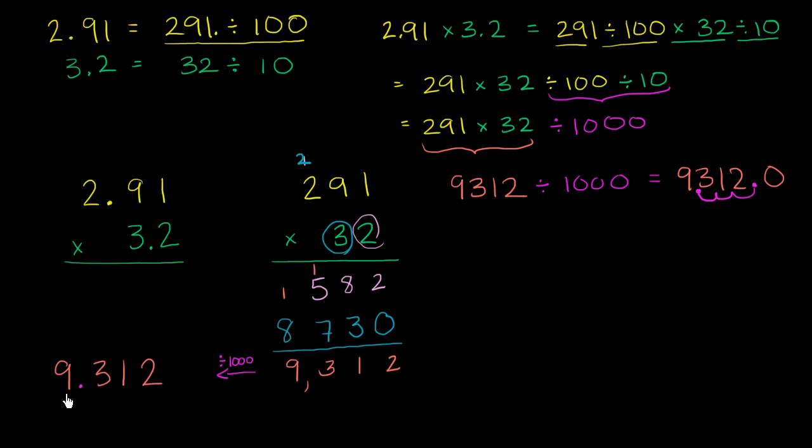Now, there's something very interesting here. In our original expression, we had 1, 2, 3 total numbers behind the decimal. And then over here, we have 1, 2, 3 total numbers to the right of the decimal.